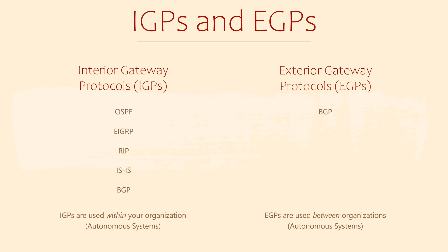The simplest example of using BGP is between your company and your internet provider. You are both different autonomous systems, as you're both managed by different people. This is common if you have a backup internet connection — if your primary connection fails, BGP routes traffic across the backup connection.